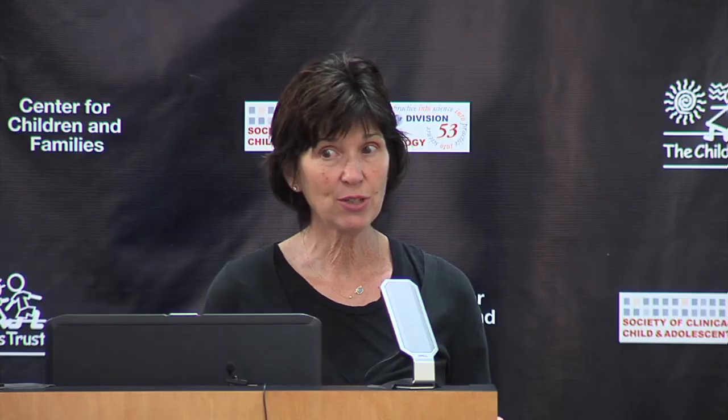But you can have children who are really disinterested in toys, and so they may be either developmentally very young, like our first child, so people games are going to be very important. We can bring in an object with a puppet so that you can get that shifting between object and person. We can get a song that matches a toy, like 'Wheels on the Bus' and have a bus. There are ways of bringing in objects, but there are times where you're just going to want to do people games — it may be a big reinforcer — and then you can transition back and forth between people games and people-object games.